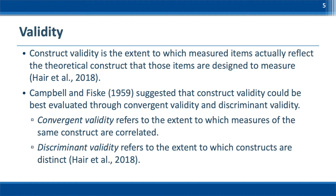There are several ways of testing construct validity. Byrne 2010 introduced the method called Multi-Trait-Multi-Method. This is a popular method of testing construct validity, especially discriminant validity. However, this method requires multiple trait factors and method factors, which might not be available in all studies. Hair et al. 2010 Chapter 13 introduced a more effective method using Average Variance Extracted, or AVE. This method is easier to perform and provides more accurate evaluation of construct validity. In this video, we will use this method.